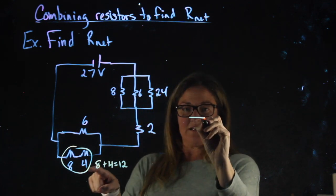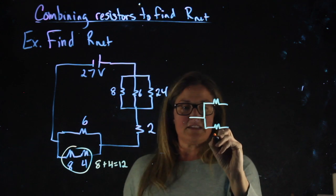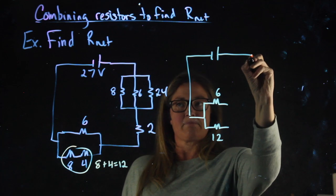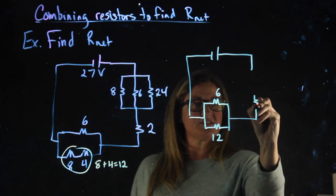So this portion of the circuit down here is the same as if I have a 6 and a 12 there. I'm going to leave the 2 ohm resistor as it is.